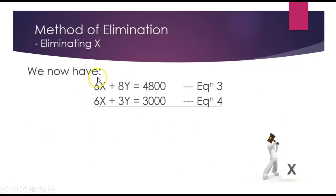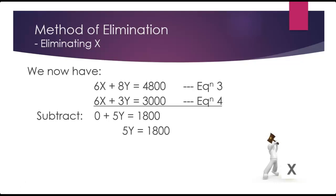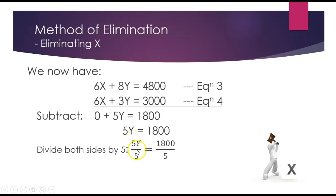Now the coefficient for x in both equations is 6, so we can eliminate x by subtracting. 6x minus 6x gives us 0. Then 8 minus 3 gives us 5y, and 4800 minus 3000 gives us 1800. Simplified, we have 5y equals 1800 — we have eliminated x. Now we want to solve for y. Since 5 is being multiplied by y, we divide both sides by 5: 5y divided by 5, the 5s cancel, equals 1800 divided by 5, which means y is equal to 360.